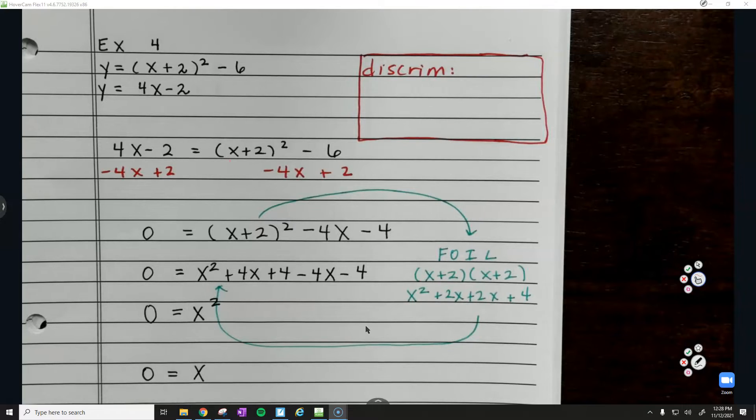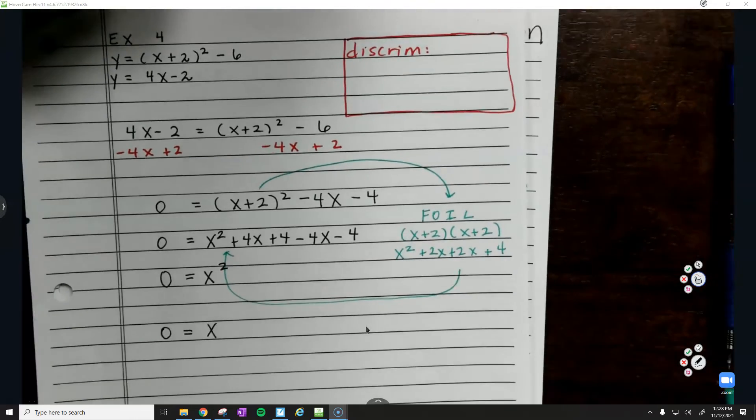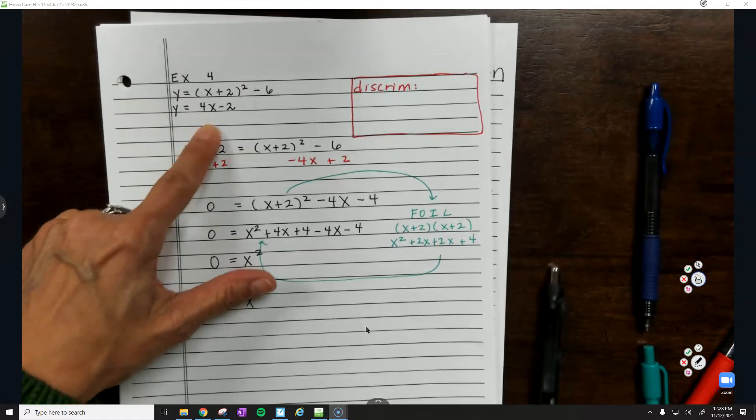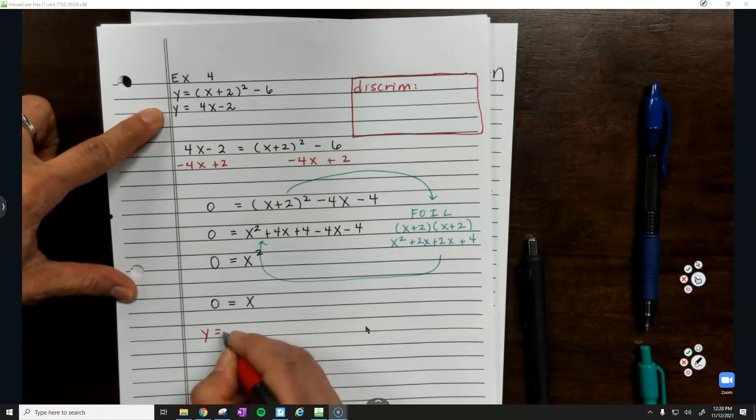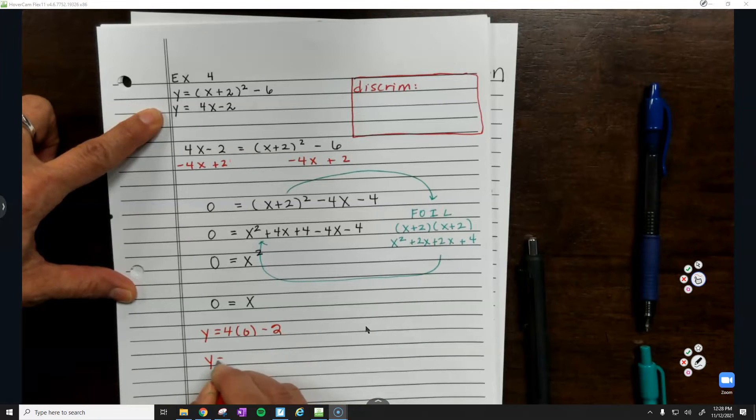So now we have the answer for x. We have to go back and get the answer for y. I'm just going to use the simplest equation possible. So y equals 4x minus 2. What is y equal? Negative 2.